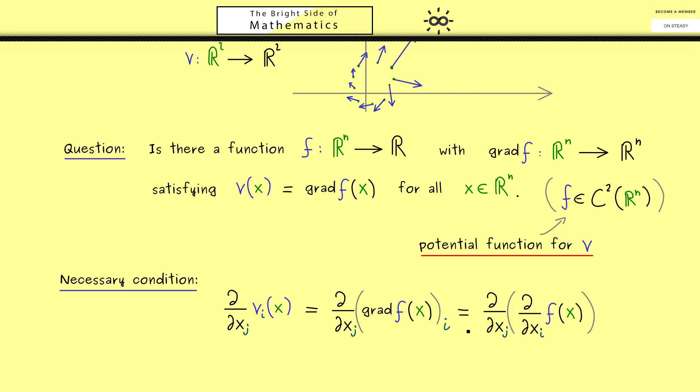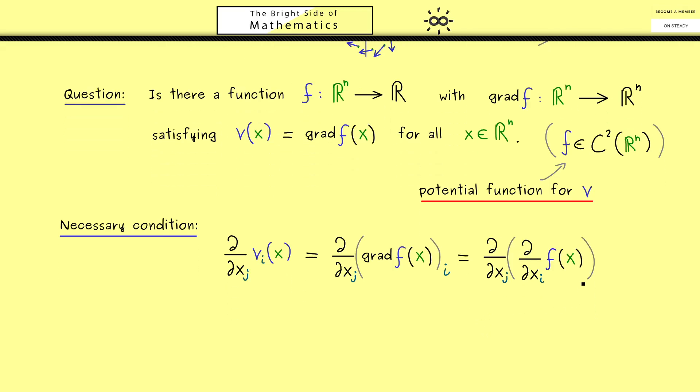And then you see, exactly at this point, we can use Schwarz's theorem. This means, we are able to exchange the order of the partial derivatives without changing the result. Hence, what we have now is first the partial derivative with respect to x_i and then with respect to x_j.